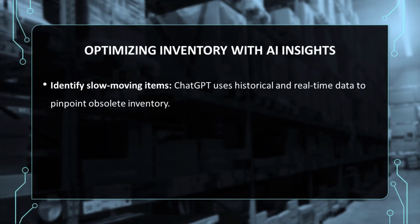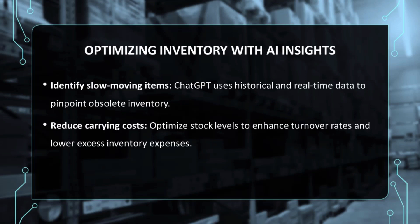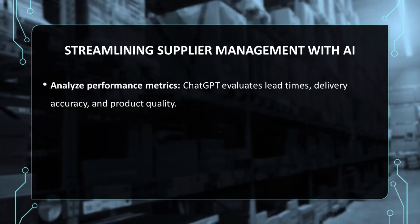Inventory optimization: Leveraging historical sales data and real-time demand insights, ChatGPT can optimize inventory levels by identifying slow-moving or obsolete items. This enables businesses to trim excess inventory, thereby reducing carrying costs and enhancing inventory turnover rates.